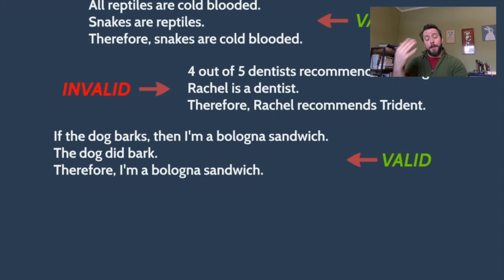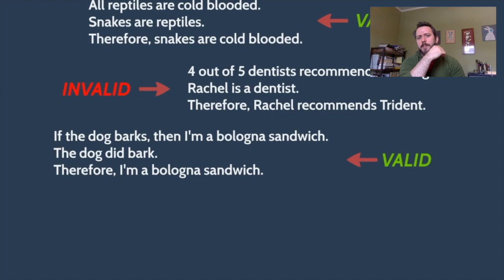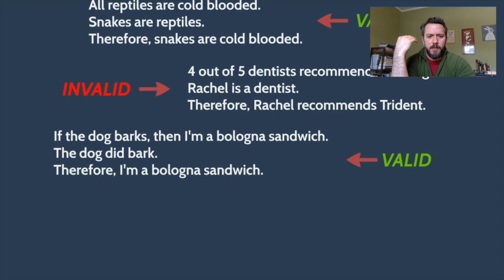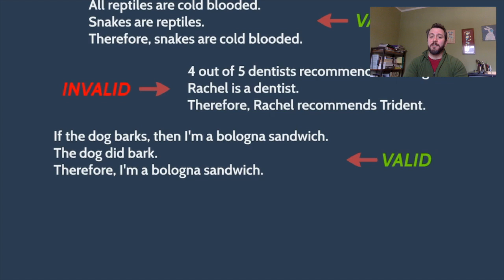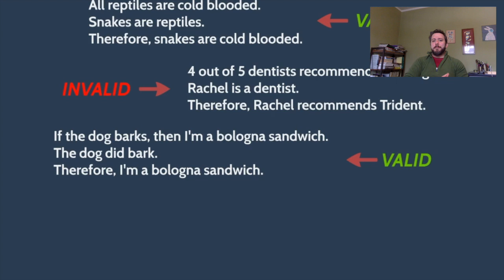If those premises were true, a valid argument is one where true premises would guarantee the truth of the conclusion. The first premise — 'if the dog barks, then I'm a bologna sandwich' — is clearly false. But disregarding whether the conclusion is true or false: if those premises are true, the conclusion does have to be true. This argument is valid. Just because an argument is valid doesn't mean its conclusion is true — it just means that if the premises were true, the conclusion would have to be true.